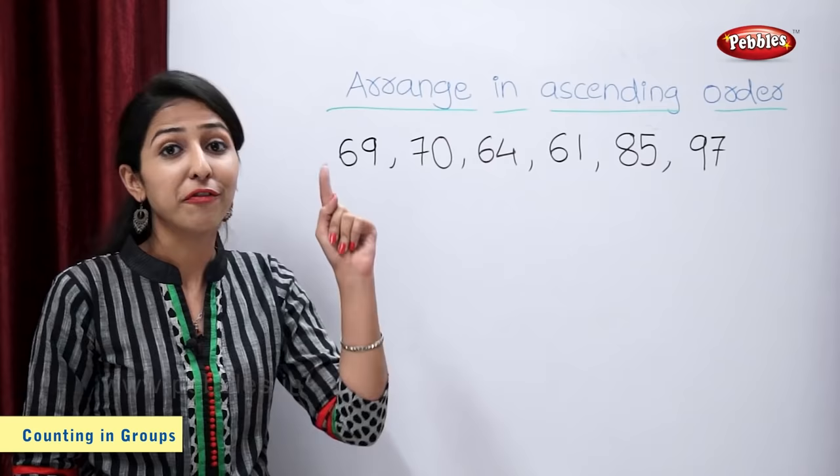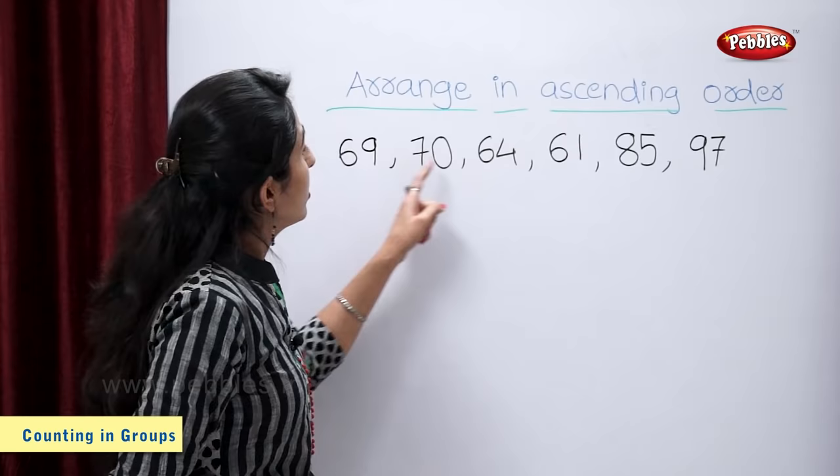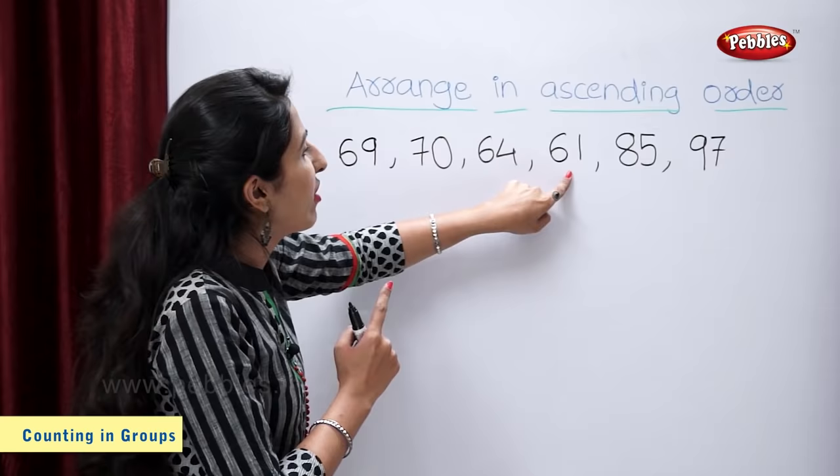So, let's find out the smallest number. Tell me students, which is the smallest number? 69? No. Then 61. 61 is the smallest number.